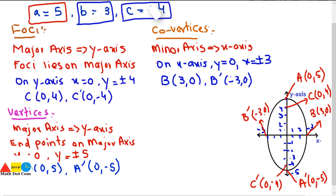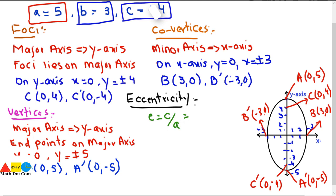From a, b, and c we can find eccentricity, length of latus rectum, and directrices. Eccentricity: e = c/a = 4/5 = 0.8. For an ellipse, eccentricity is always less than 1.